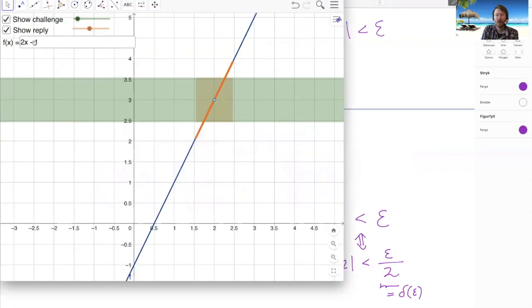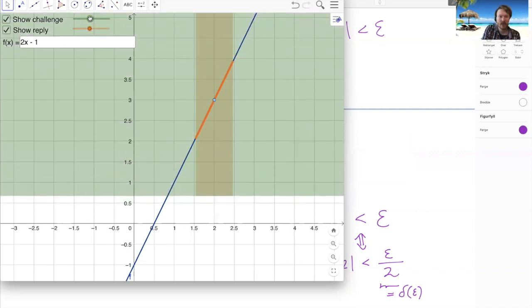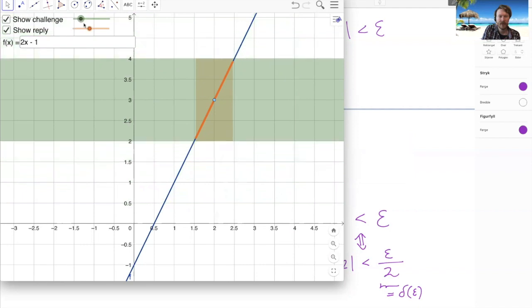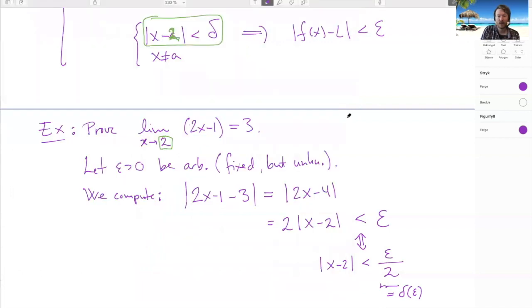So here I've put my function 2x minus 1. And now here I put this point above two, which puts me at height three. And then now I can do a challenge here. So if I do a challenge of one, that means going a distance one to either side. We can see how this works. So if I'm challenging myself. Let's do it here by an epsilon. Then I can open this inequality up here.